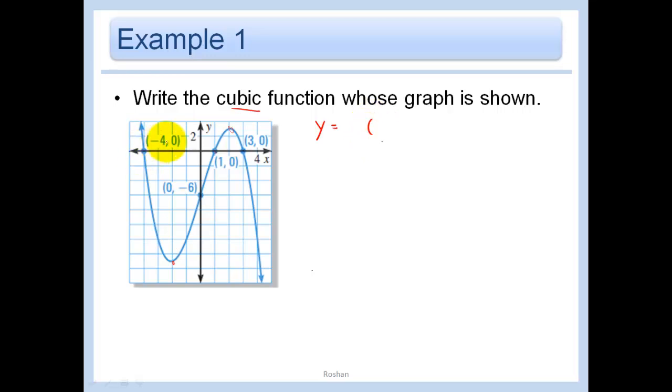First of all, if negative 4 is a zero, then x plus 4 is a factor. If 1 is a zero, then x minus 1 is a factor. And if this is the point (3, 0), 3 is a zero, so x minus 3 is a factor.